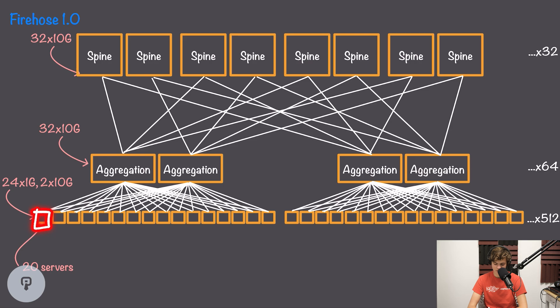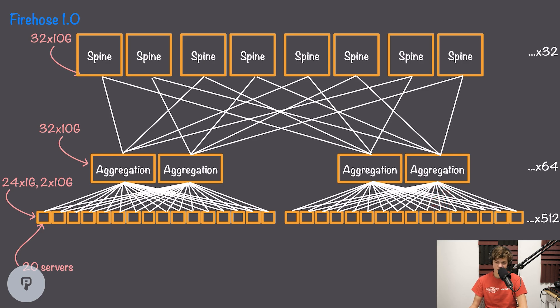Before this went into production, Google went through a completely new version of the hardware for the switches, based on lessons from the original design. The aggregation layer was changed to handle link failures better. Each top-of-rack switch has a left link to one aggregation switch and a right link to another. If one switch's left link and another's right link both fail simultaneously, those two switches can't communicate — because the left-side and right-side switches have no way to connect to each other.